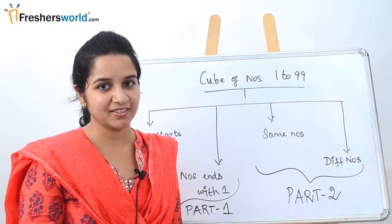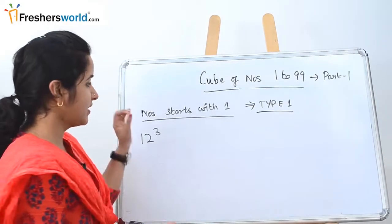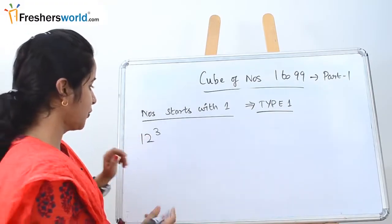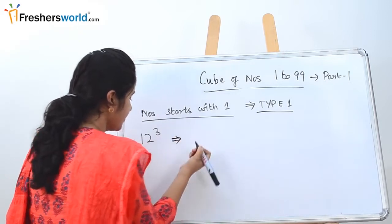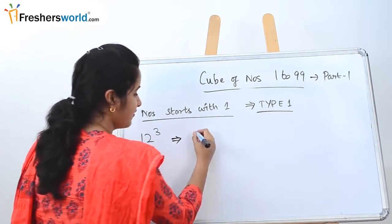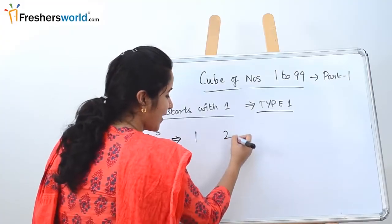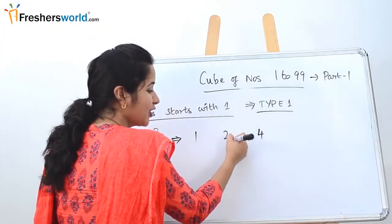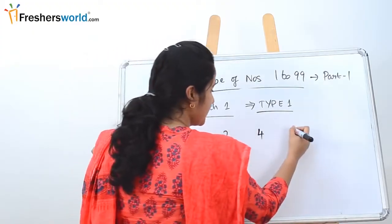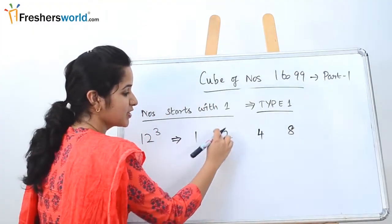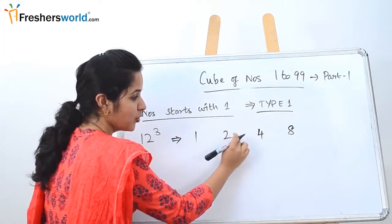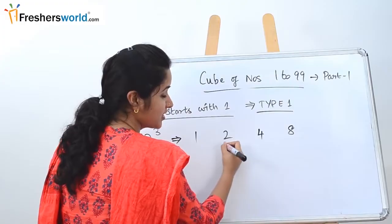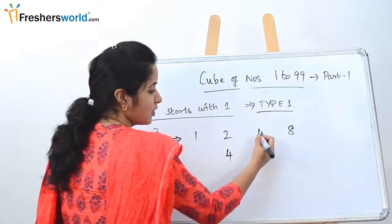Let's get started with the first type — numbers that start with 1. Let's take 12 cubed as an example. First, write the first two digits as such. Now square the second digit: 2 squared is 4. Then cube the second digit: 2 cubed is 8.